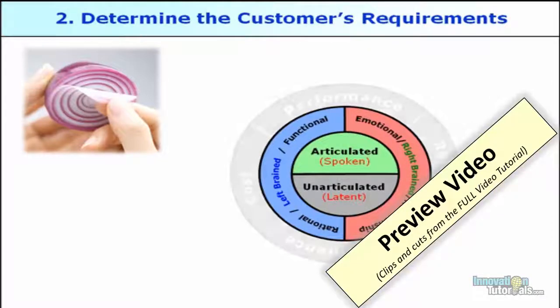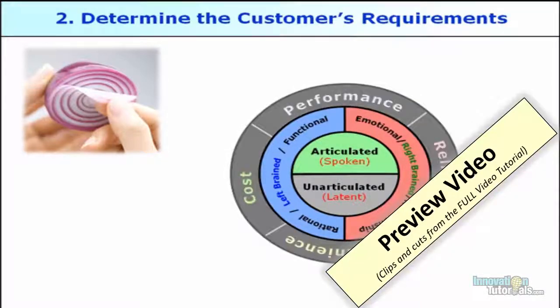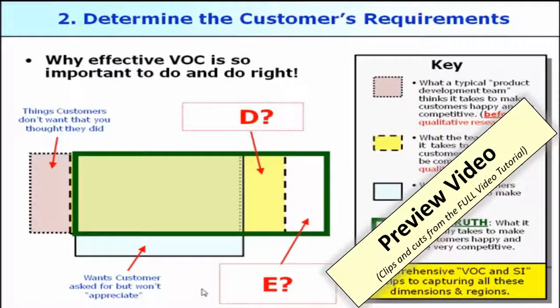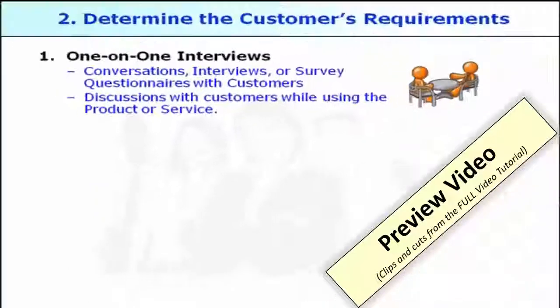Outside of that layer are four main categories. 'C' represents wants or needs that customers ask for but won't appreciate. We like to define appreciate as things that customers are willing to pay for. In a bit, we'll show you some examples of open-ended questions.